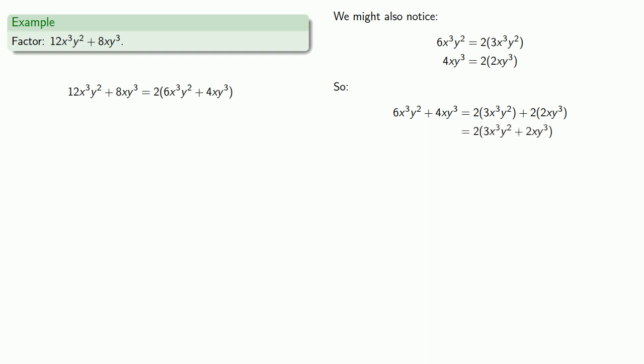My expression 6X cubed Y squared plus 4XY cubed can be rewritten by removing a factor of 2. Remember that equals means wherever we see one thing, we can replace it with the other. So I see 6X cubed Y squared plus 4XY cubed here and I can replace it with 2 times 3X cubed Y squared plus 2XY cubed.